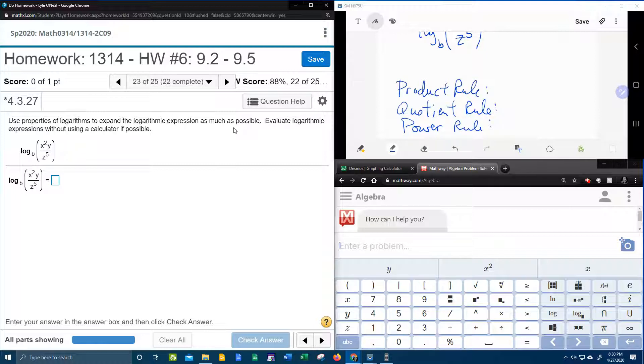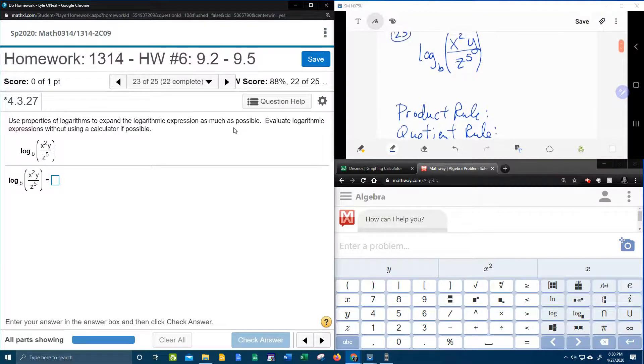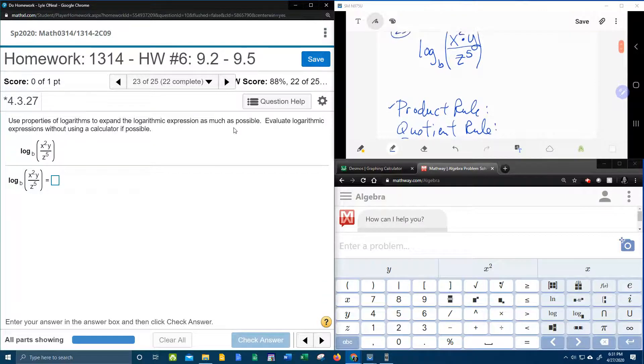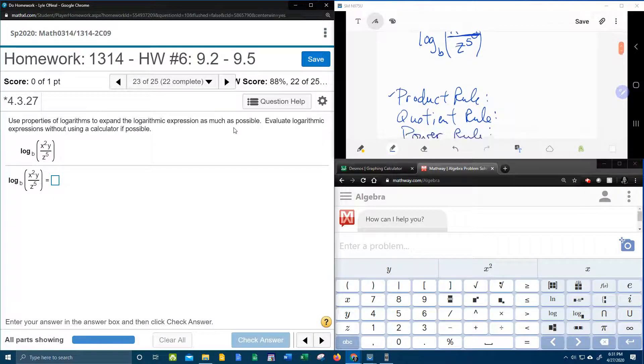All right, so the product rule says if you're taking the log of something that's being multiplied, then you can separate those factors with addition. So we are taking the log, see the x squared and the y, those are being multiplied. So the product rule is in effect. The quotient rule says if you're taking the log of a fraction, then the numerator and the denominator can be separated with subtraction. So we do have the log of a fraction. So the quotient rule is in effect.